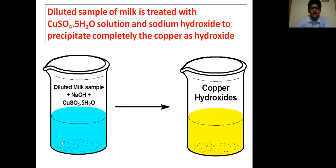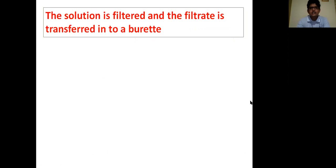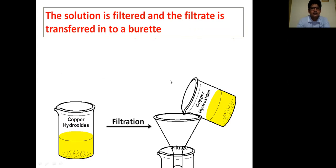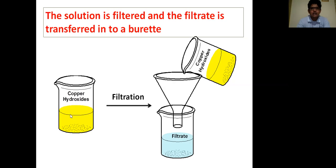This is the sample of honey in which NaOH is added and copper sulfate is added, and this copper sulfate is precipitated as copper hydroxide. The solution is filtered and the filtrate is transferred into the burette. The copper hydroxide precipitate is filtered to remove the residue and to collect the filtrate. This filtrate we have to transfer into burette for the next step.